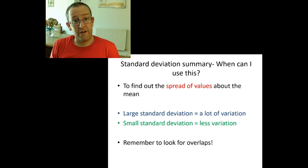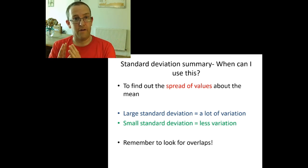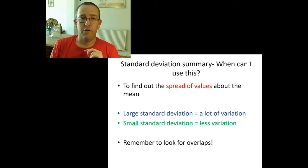To find out the spread of values about the mean is why you use standard deviation. If you've got a very large standard deviation, you've got a lot of variation. The data is quite spread out. Small standard deviation, you've got less variation and the data is very clustered around the mean. Remember to look for overlaps.